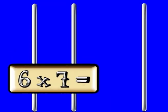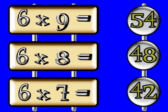When I multiply by 6, it goes a little bit like this. 6 times 7 is 42, 6 times 8 is 48, 6 times 9 is 54.